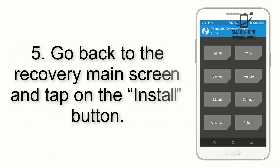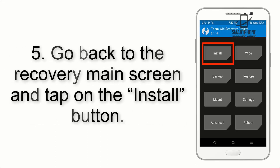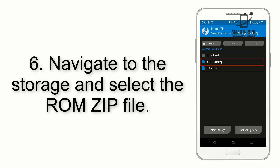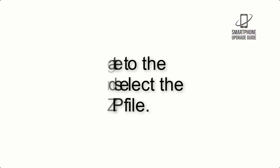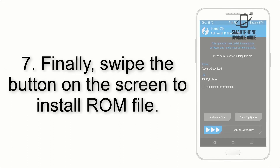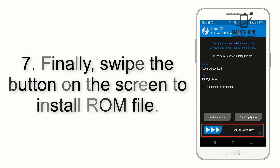Step 5: Go back to the recovery main screen and tap on the Install button. Step 6: Navigate to the storage and select the ROM zip file. Step 7: Finally, swipe the button on the screen to install the ROM file.